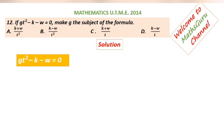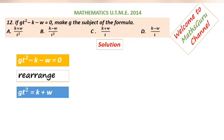We have the equation GT square minus K minus W is equal to 0. What we're going to do now is to rearrange this expression. GT square is equal to K plus W.